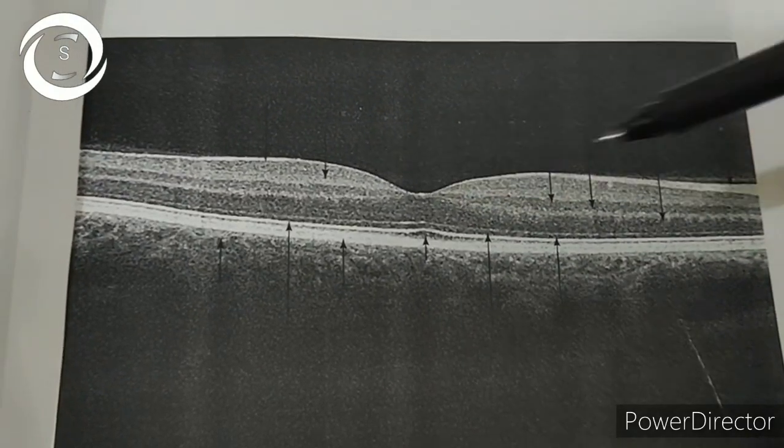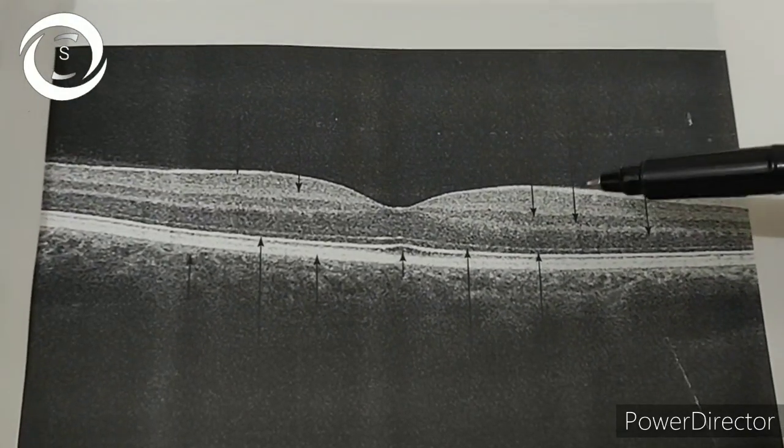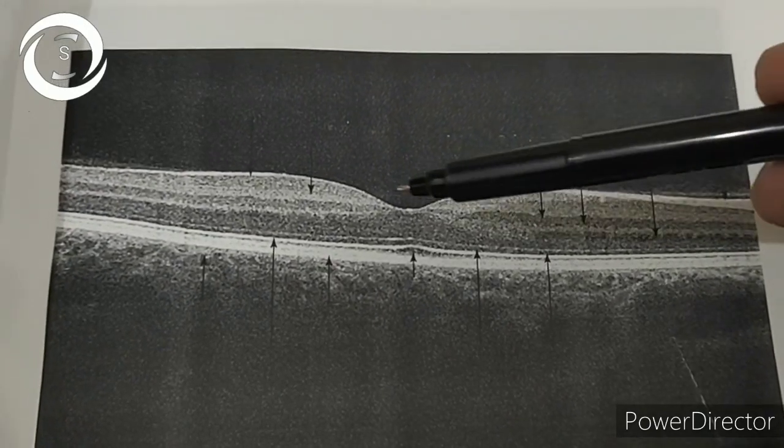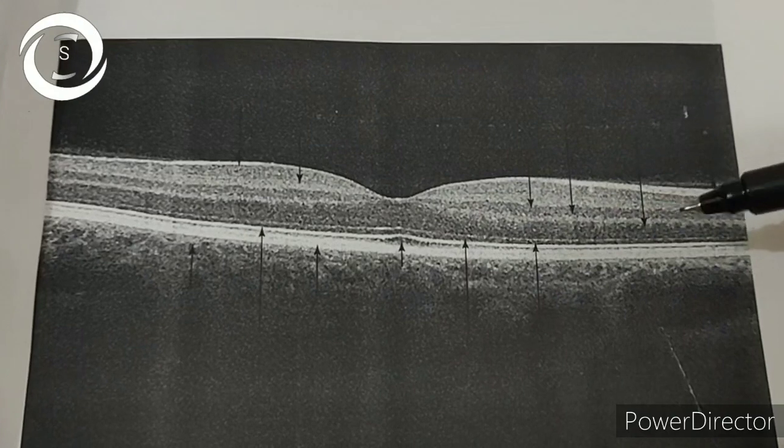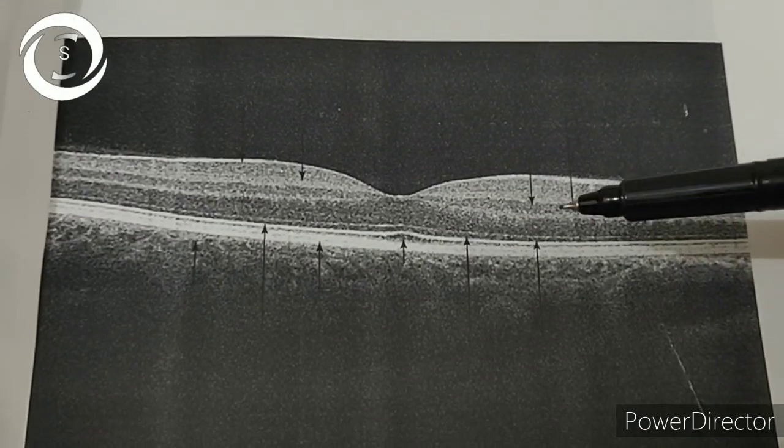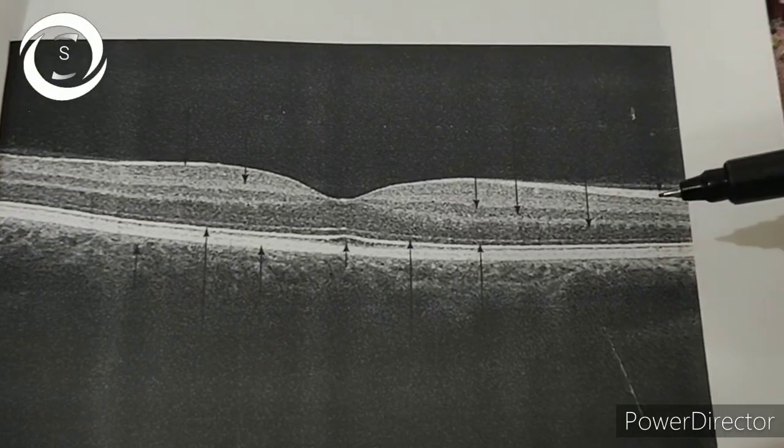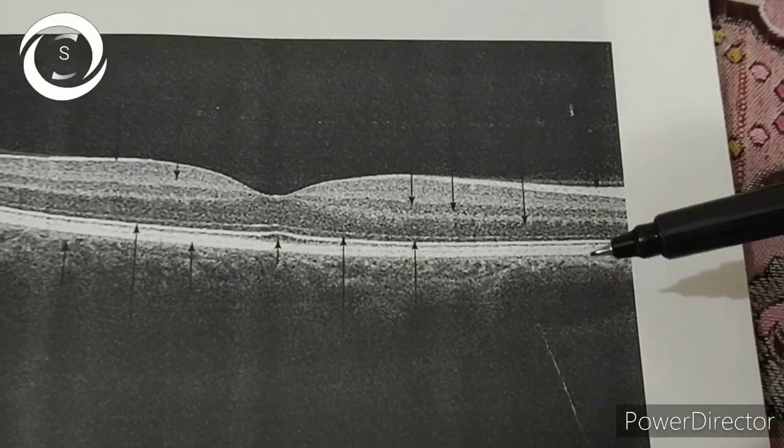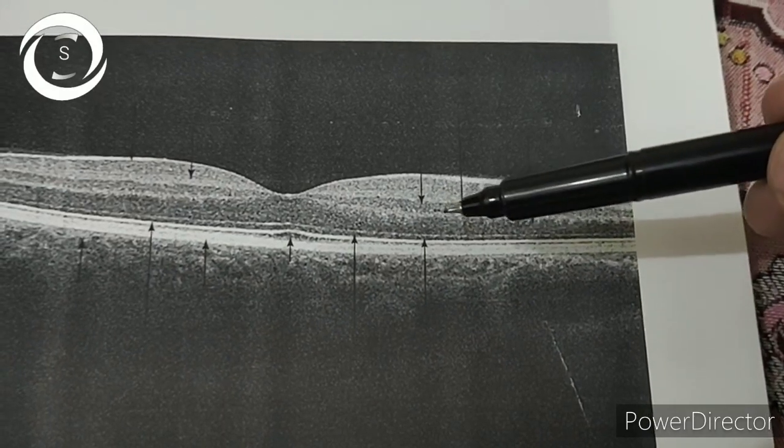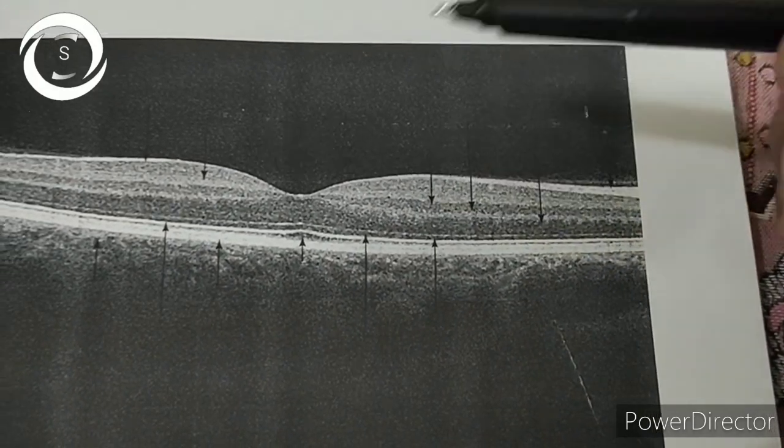Now this is an OCT of the macula. Look at which side the nerve fiber layer beneath the internal limiting membrane is thicker. Like here, clearly on the right side the nerve fiber layer is thicker, so that's the OCT of the right eye because the disc is on that side.